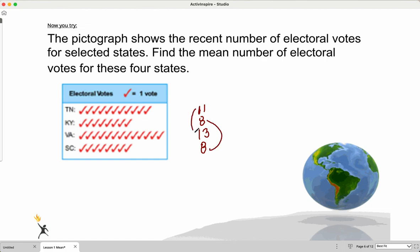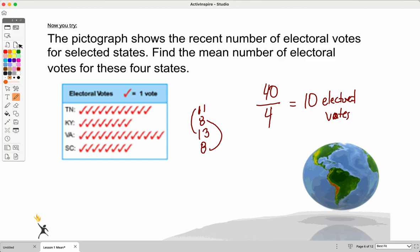So again, I'm going to put my numbers together so I can make it a real quick, easy add. Eleven and thirteen is twenty-four. Twenty-four plus sixteen is forty. And then, again, I'm going to divide by four because that's how many number of states I'm looking at. And that shows that the average number of electoral votes is ten electoral votes for these four states. All right, let's keep going.